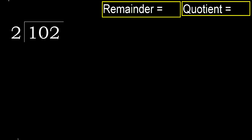102 divided by 2. 1 is less, therefore next. 10 is not less, therefore work with 10.